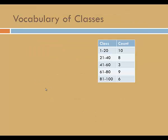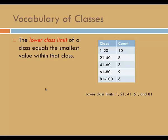Let's look at some of the vocabulary of classes. The lower class limit of a class equals the smallest value within that class. The table on the right-hand side of the screen has classes 1 through 20, 21 through 40, 41 through 60, 61 through 80, and 81 through 100. The lower class limits are the smallest values in each class. In this case, they are 1, 21, 41, 61, and 81.